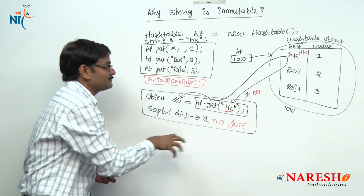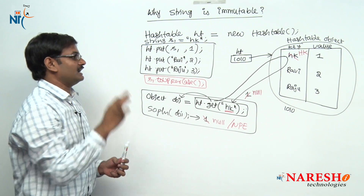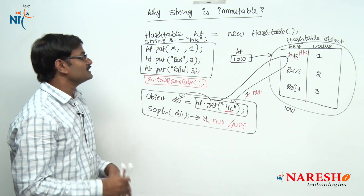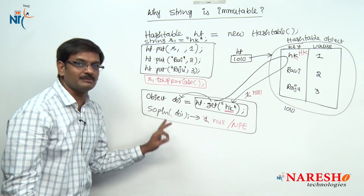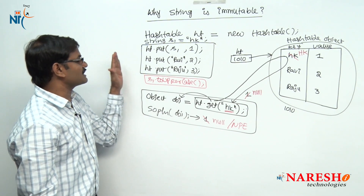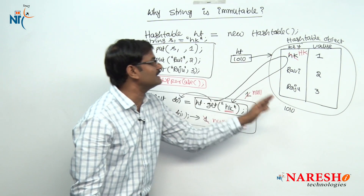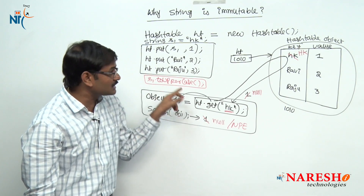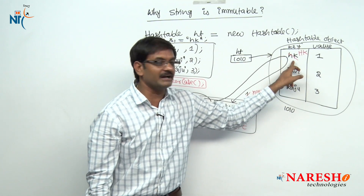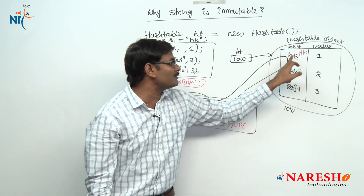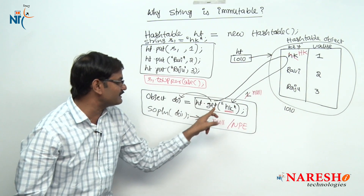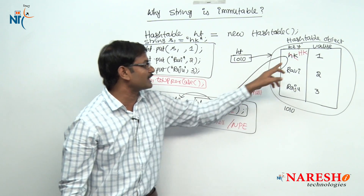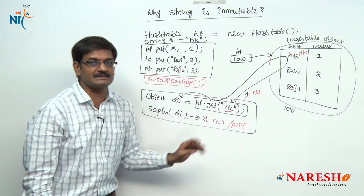Sun Microsystems, keeping this point in mind, gave string as immutable. Finally, string is given as immutable because to use a string object as a key in a Map object — if it were given as mutable, then data would be modified in the same object. If data is modified in the same object, at retrieval time we are retrieving with the old value, not the modified value, and finally we are going to get null as a result.